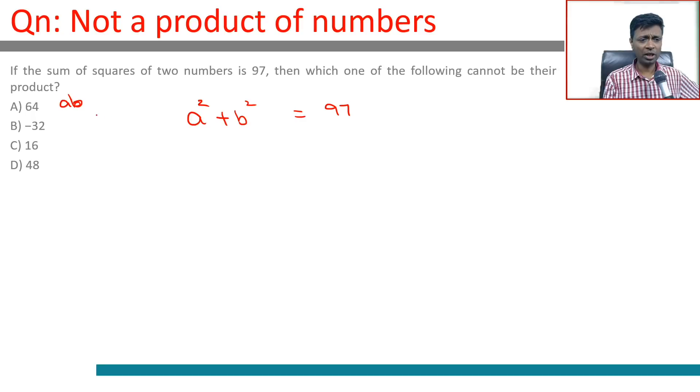If you think about two times ab: ab is 64, that means 2ab should be 128; 2ab should be -64; 2ab should be 32; 2ab should be 96.